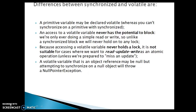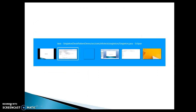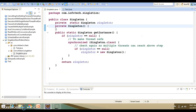A volatile variable that is an object reference may be null. But attempting to synchronize on a null object will throw a NullPointerException. So when using a synchronized block you cannot use a null reference, but if you declare a variable as volatile, you can assign null to it.